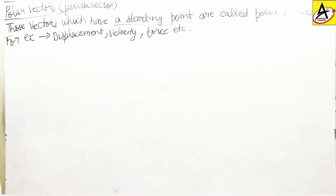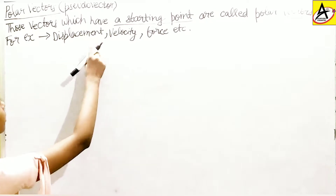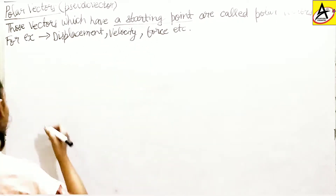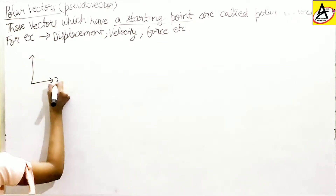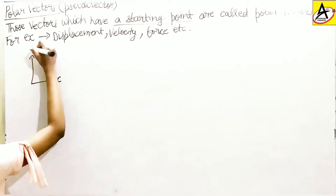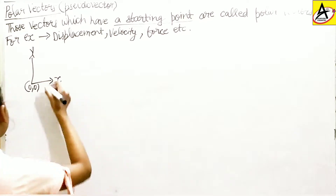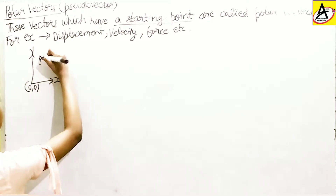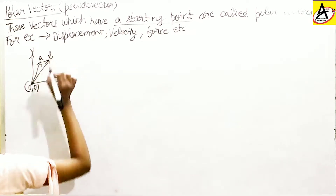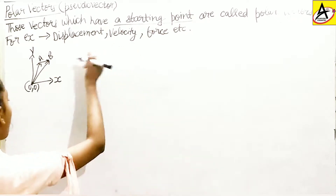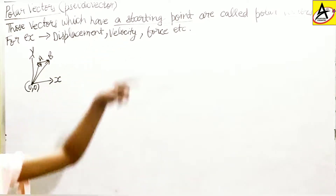In the displacement vector, what is its starting point? In displacement, its starting point is the initial position. As I told you, we have the X axis, Y axis, origin at (0,0). I took two points, point A and point B, connected them with an arrow. So vector AB is the displacement vector and A is the starting point — the initial position.